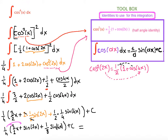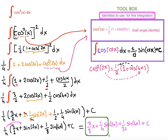We're going to distribute one fourth to each term one by one. One fourth times three over two is three over eight x, plus one fourth sine of 2x, plus one fourth times one eighth is one over 32 sine of 4x plus c. This is the final answer — you can box it. This is the end of the video, thank you for watching. Please don't forget to like on the way out or subscribe, thank you very much.